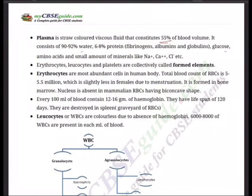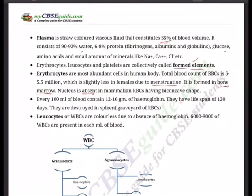The solid materials present in the blood are erythrocytes, leukocytes, and platelets, collectively called formed elements. Erythrocytes are the most abundant cells in the human body. The total blood count of RBCs is 5 to 5.5 million per ml, which is slightly less in females due to menstruation. They are formed in bone marrow — that is the preparation site of erythrocytes. Nucleus is absent in mammalian erythrocytes — they are enucleated cells with a biconcave shape.